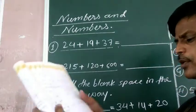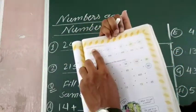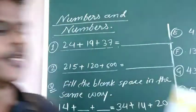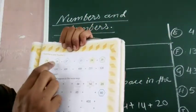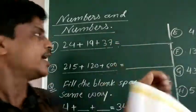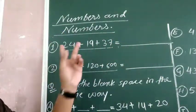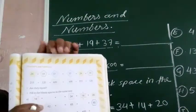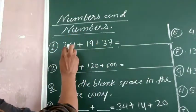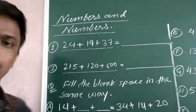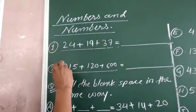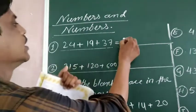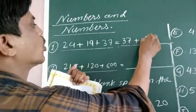See, in your textbook it is given on page number 105 — 'Numbers and Numbers.' Two examples are given here. The first example is: 24 plus 19 plus 37. These three numbers are there. Now we also have three additional numbers: 37 plus 24 plus 19.